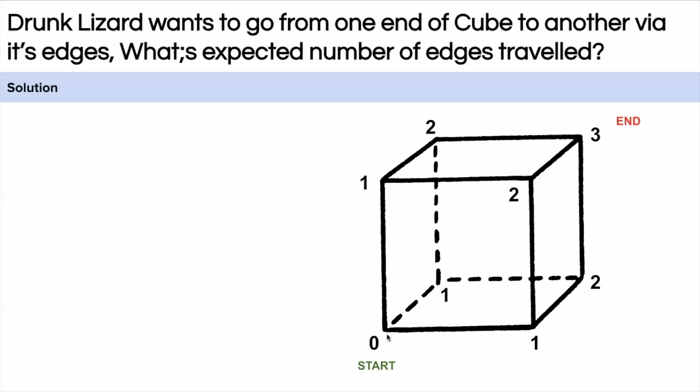So I have marked the corners of the cube from zero to three. For example one, one, one because from zero it has a distance of one and two and three similarly. So from zero the lizard can move to any of the ones which are mentioned in the cube.